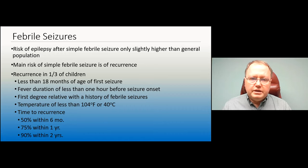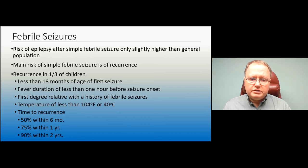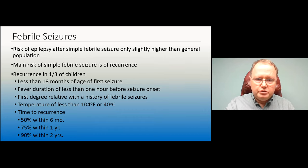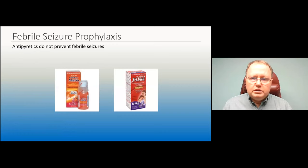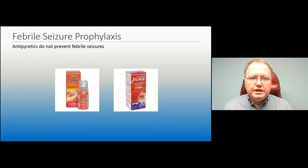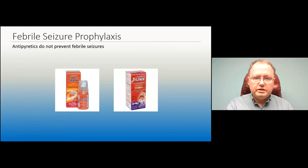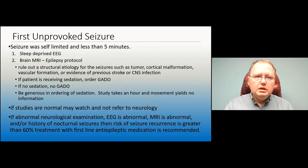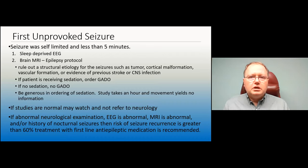The main risk of simple febrile seizures is recurrence — about a third of kids will have more than one. Risk factors for recurrence include age less than 18 months at first seizure, fever duration less than one hour before the first seizure, a first-degree relative with febrile seizures, or temperature less than 104°F. About half will recur within six months, 75% within a year, and 90% within two years. Importantly, multiple studies have shown you cannot prevent a febrile seizure with antipyretics like ibuprofen or acetaminophen.